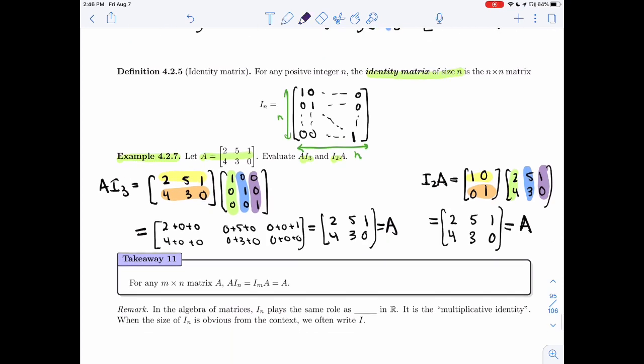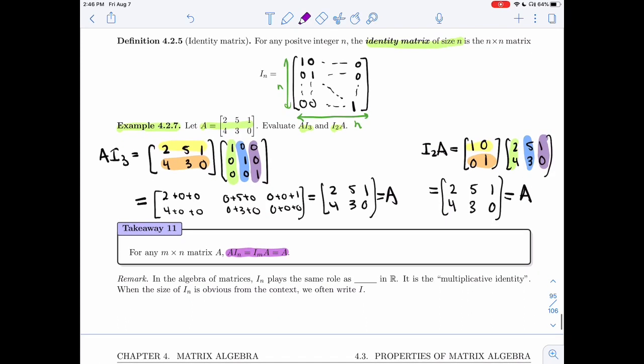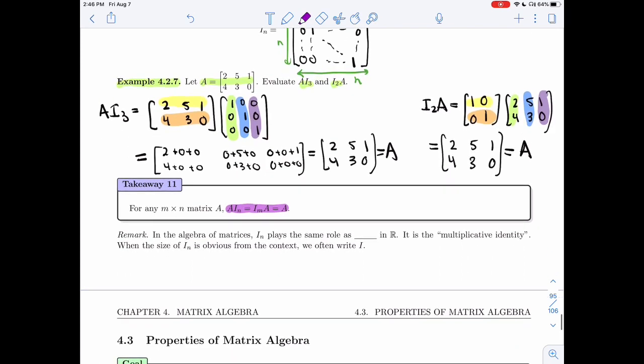In fact, that's what the next takeaway tells us. So for any matrix A, if I multiply A by I_N or by I_M, I get A back. As long as it's defined. That's why I have I_N and I_M to make sure that the products are defined. So that means that when we talked about the algebra of matrices, the I_N, the identity, will play the same role as the number one in R. It is called the multiplicative identity. And just like for the zero, if the size of I_N is obvious from context, we will only write I.